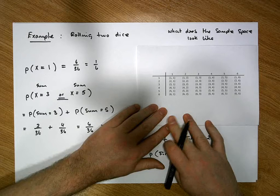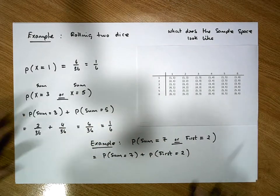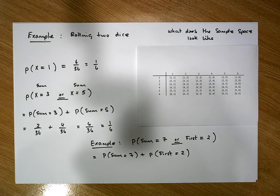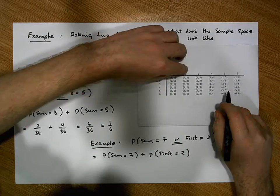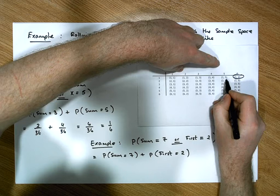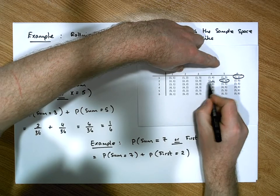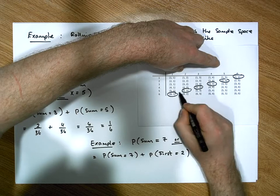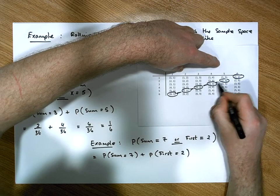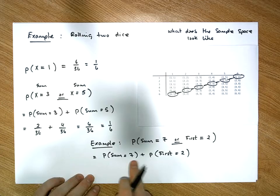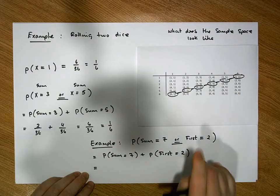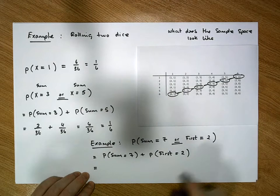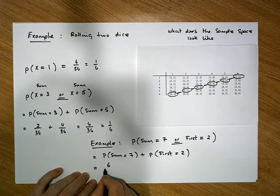When it comes to the probability that the sum is seven: (1,6), (2,5), (3,4), (4,3), (5,2), and (6,1) all give a sum of seven. For the first event, the probability that the sum is seven gives us six favorable outcomes out of 36 — that's 6/36.